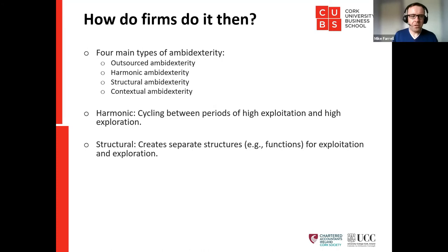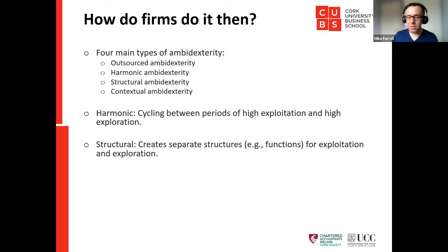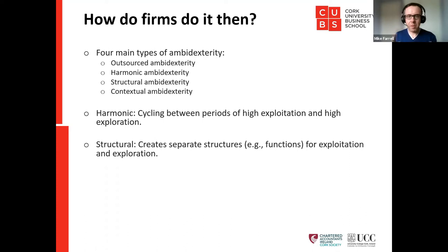Structural ambidexterity creates separate structures or functions for exploitation and exploration — the classic example being an R&D function for exploration alongside administrative functions for exploitation. The problem is that exploitation and exploration actually feed each other. If you isolate them into separate departments, you miss out on the reciprocal relationship and the greater overall result that comes from having both working together.